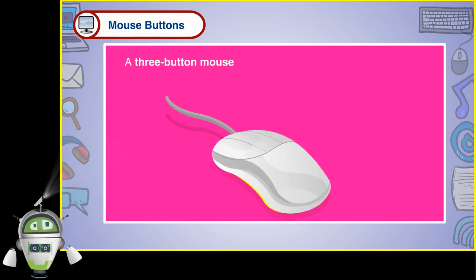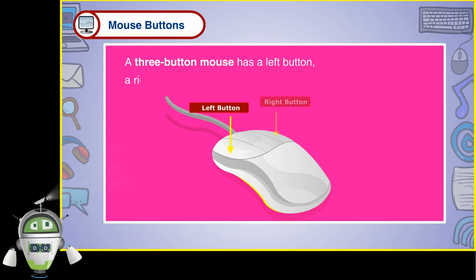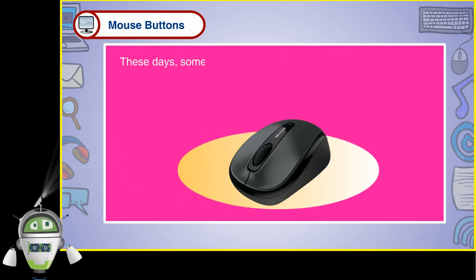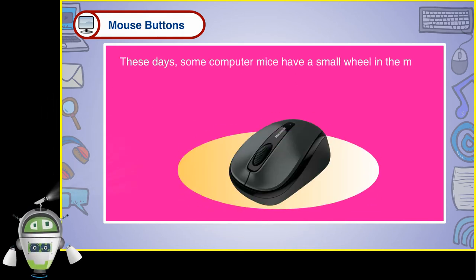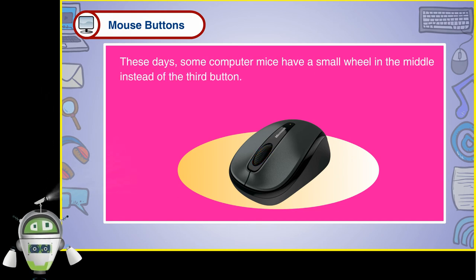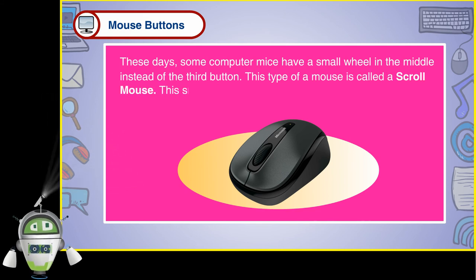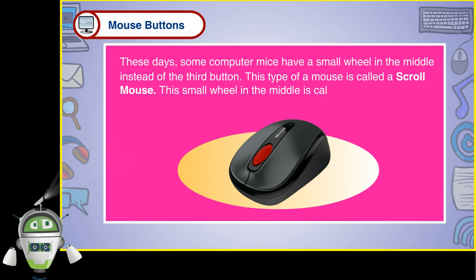A three-button mouse has a left button, a right button, and a middle button. These days, some computer mice have a small wheel in the middle instead of the third button. This type of mouse is called a scroll mouse. This small wheel in the middle is called a scroll wheel.